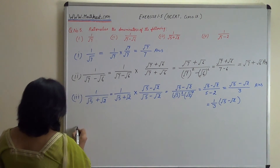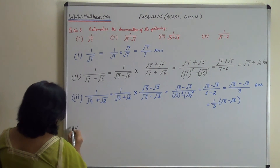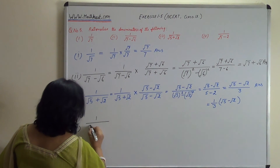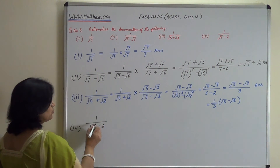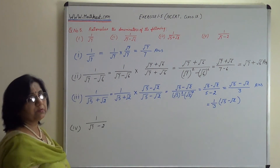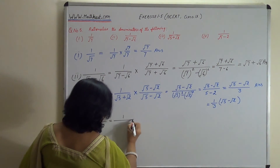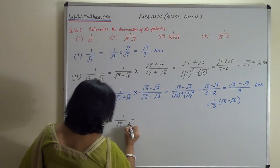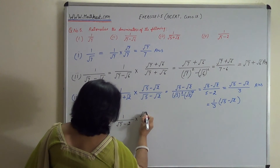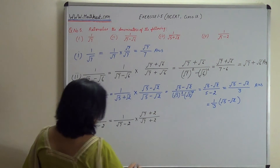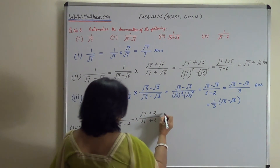अब fourth part: 1 upon root 7 minus 2. इसमें denominator root 7 minus 2 है तो root 7 plus 2 से numerator और denominator दोनों को multiply करेंगे। तो equals 1 upon root 7 minus 2 into root 7 plus 2 upon root 7 plus 2. Numerator में 1 से multiply होगा तो root 7 plus 2 आएगा।